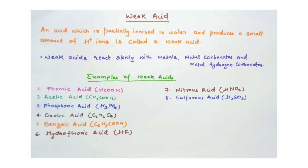Weak acids react slowly with metals, metal carbonates, and metal hydrogen carbonates. Examples of weak acids include formic acid with formula HCOOH.